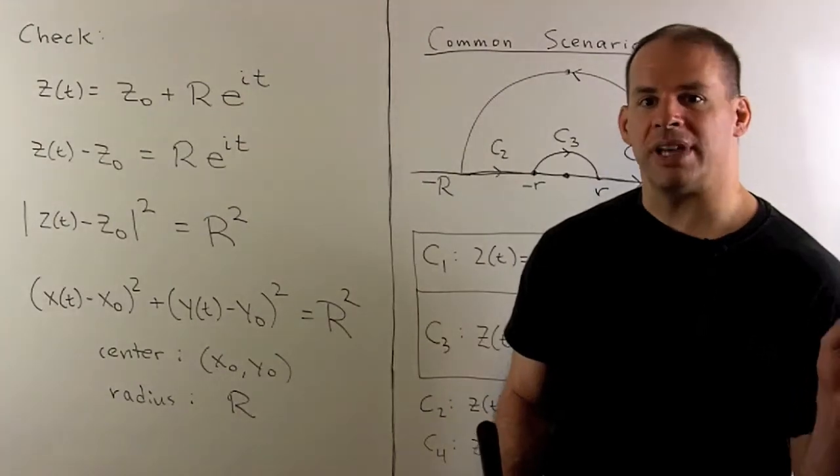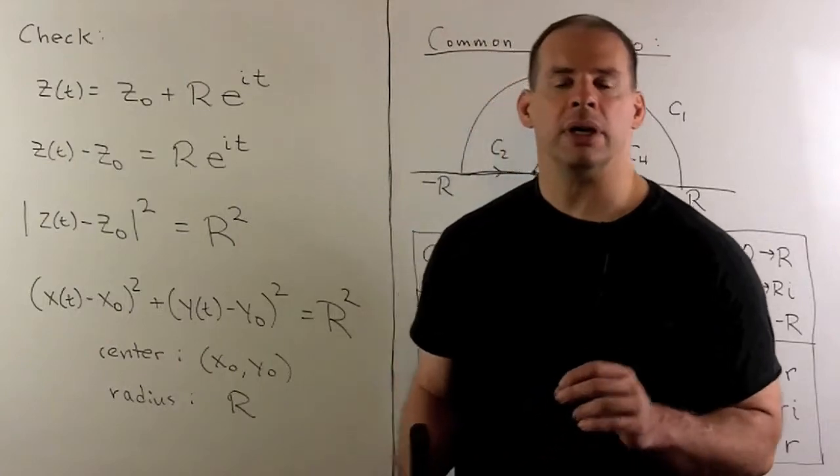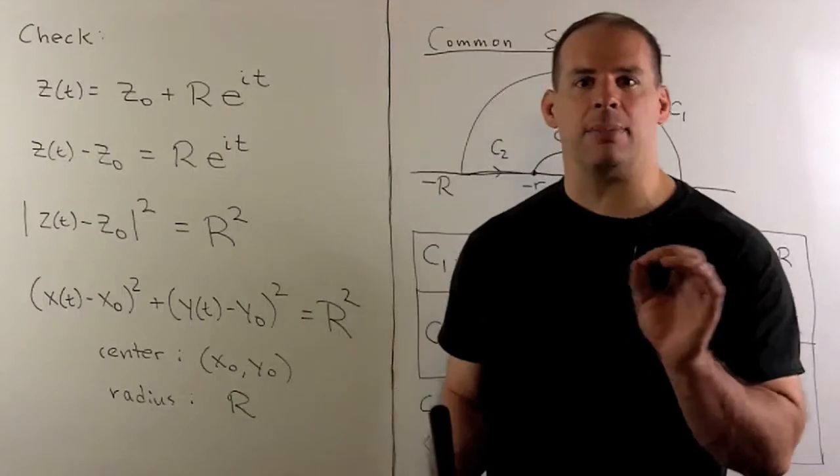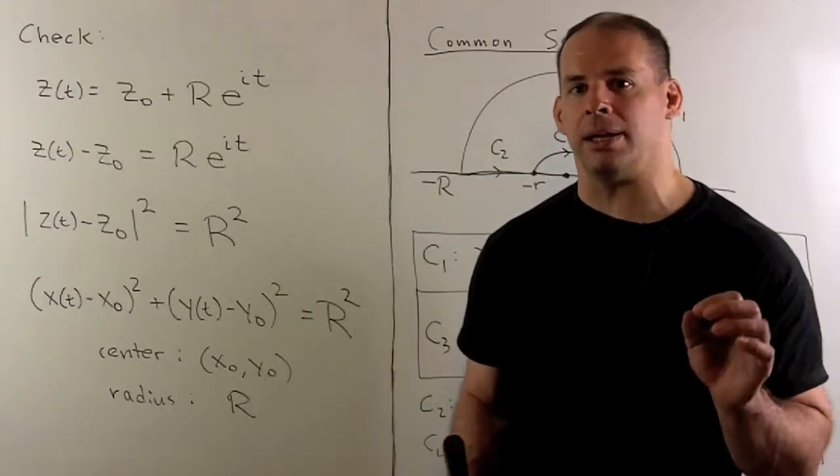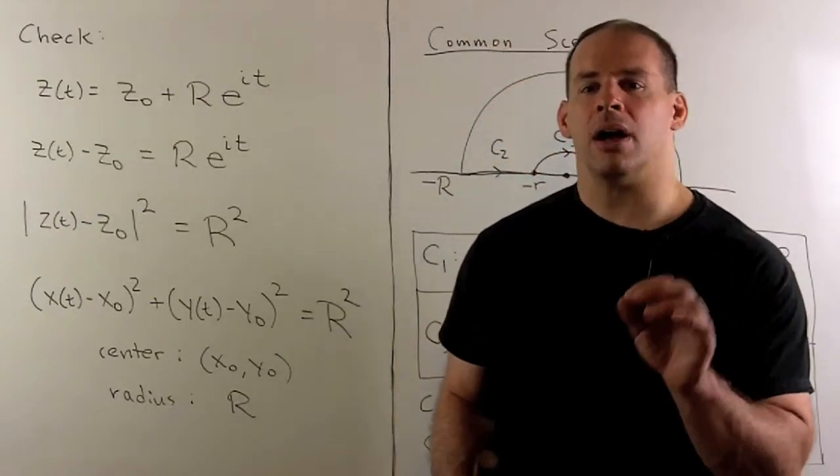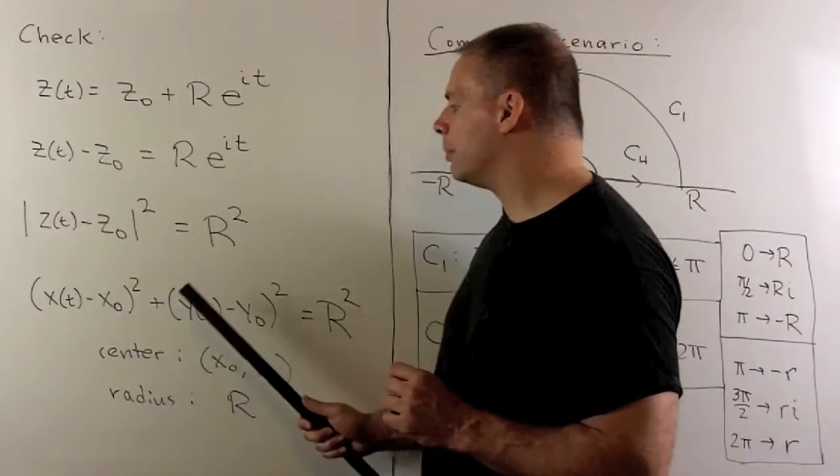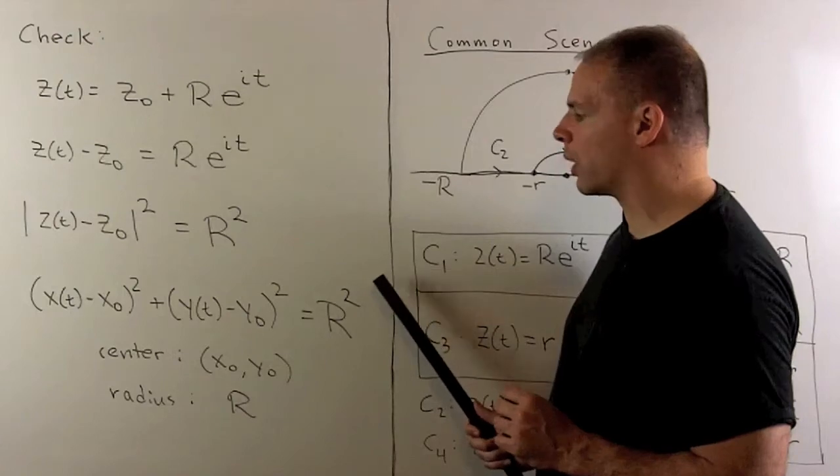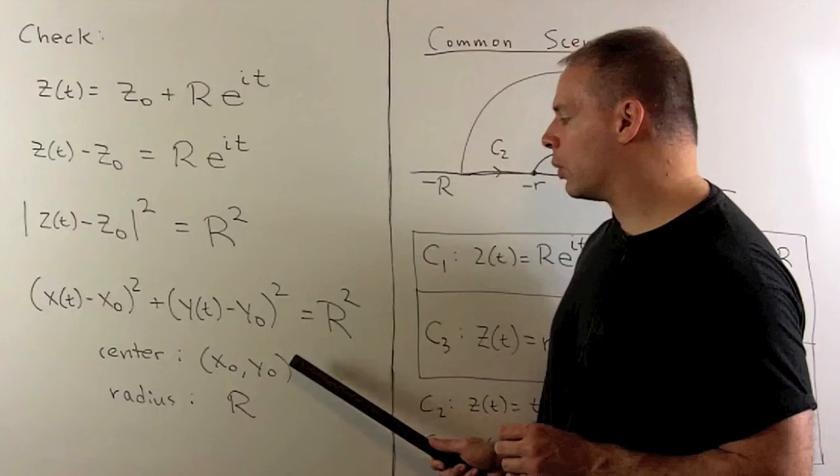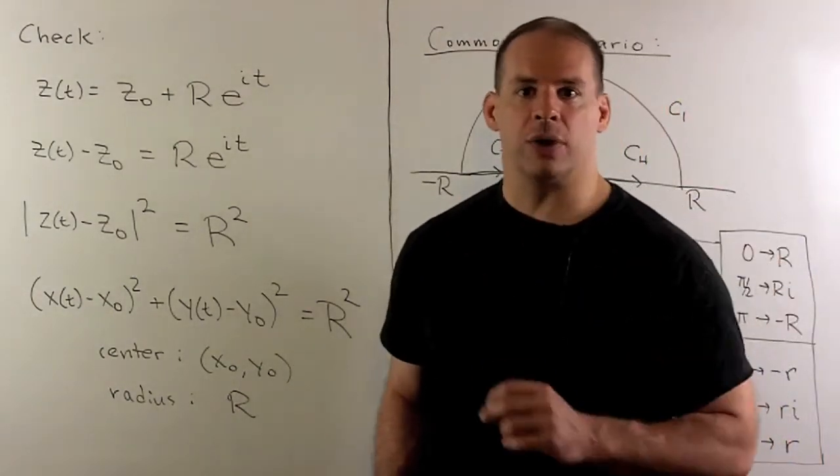On the other side, taking the modulus squared of z t minus z zero. If we separate into the real and imaginary parts, the real part is going to be xt minus x zero. The imaginary part is going to be yt minus y zero. Then the modulus squared is just going to be the sum of the squares of the real and imaginary parts. So I get xt minus x zero squared plus yt minus y zero squared equals R squared. That's just the formula for a circle centered at x zero, y zero with radius R. So that verifies our equation for a circle.